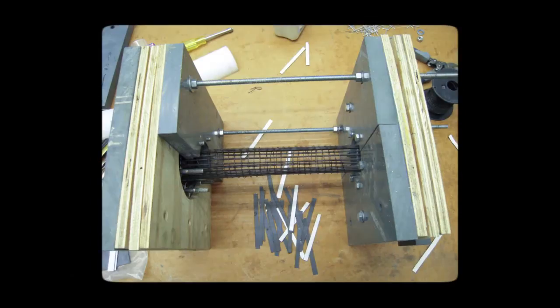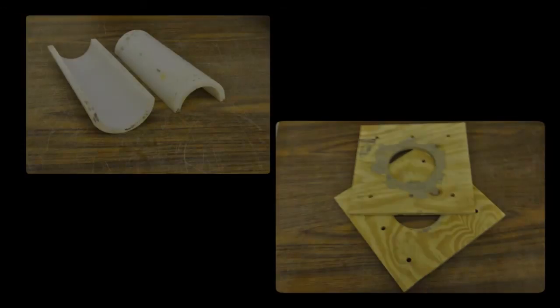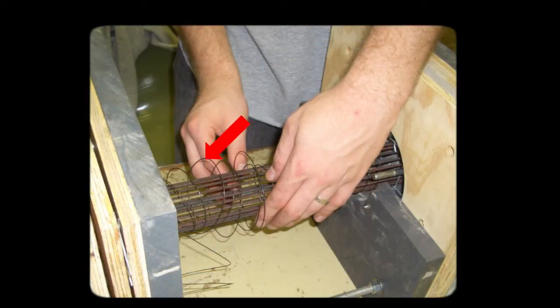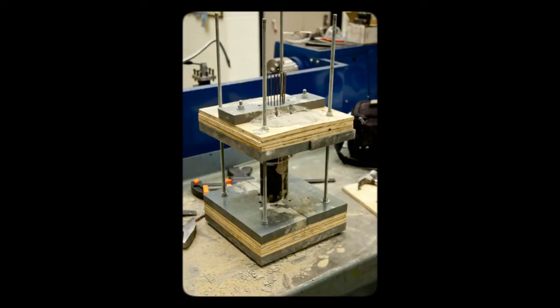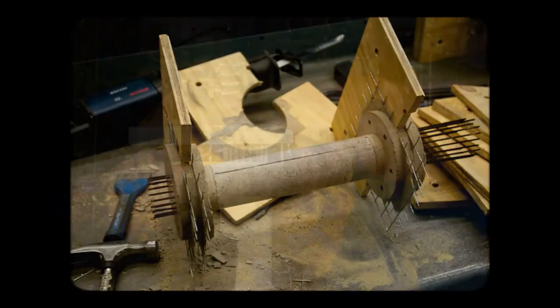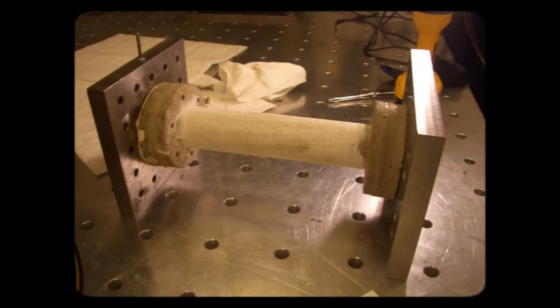The piers were cast using formwork constructed of PVC and plywood, which were fitted with longitudinal reinforcement to provide flexural strength to resist bending actions and spiral reinforcement to provide shear and torsion capacity. After allowing the micro-concrete to cure for three weeks, the formwork was removed and the specimens were painted and fitted with steel endplates to facilitate connection to the testing apparatus.